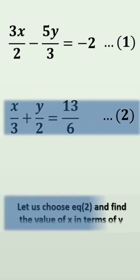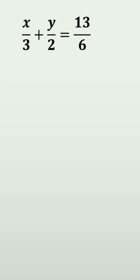Let us choose equation number 2 to find the value of x in terms of y. x by 3 plus y by 2 is equal to 13 by 6. This is equation number 2. Let us find the value of x in terms of y.